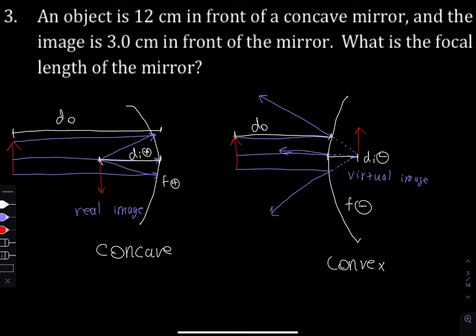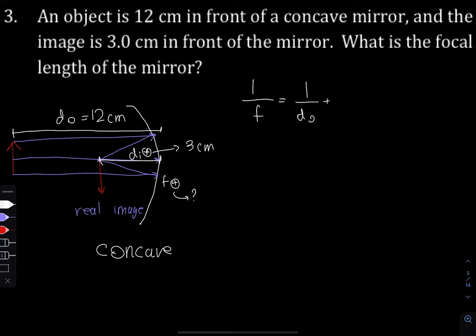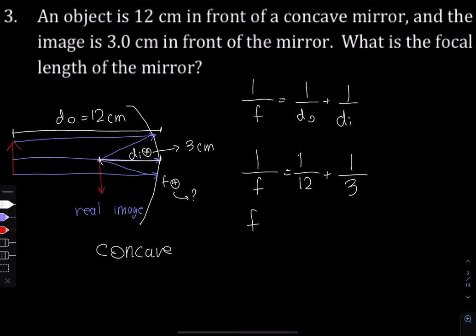In this case we have a concave mirror. An object is 12 centimeters in front of the concave mirror, so do equals 12. The image is 3 centimeters in front of the mirror — it's to the left, the front — so di equals 3 centimeters. They're asking for the focal length, so we use the same equation: 1/f = 1/12 + 1/3. Solving, the focal length is equal to 2.4 centimeters.